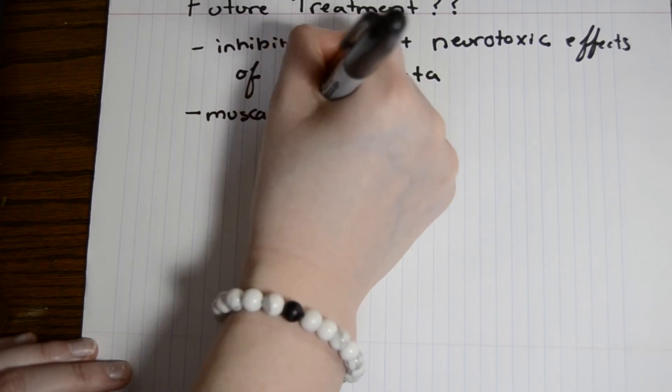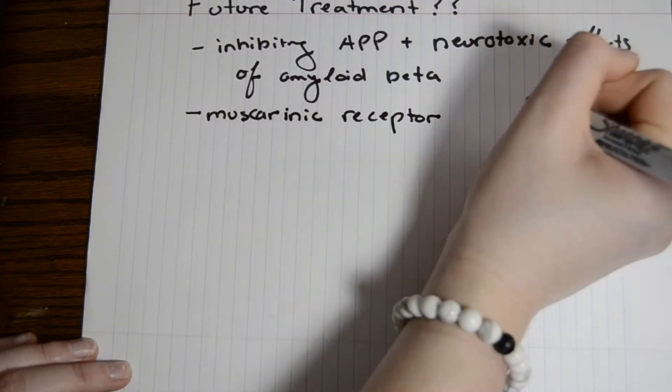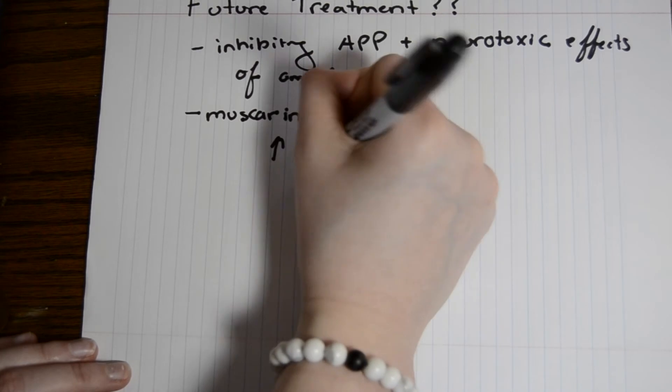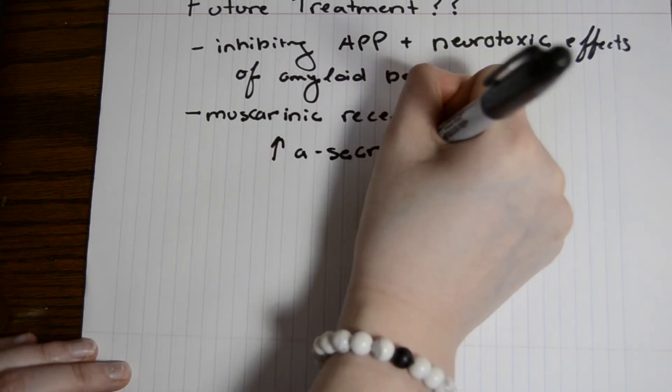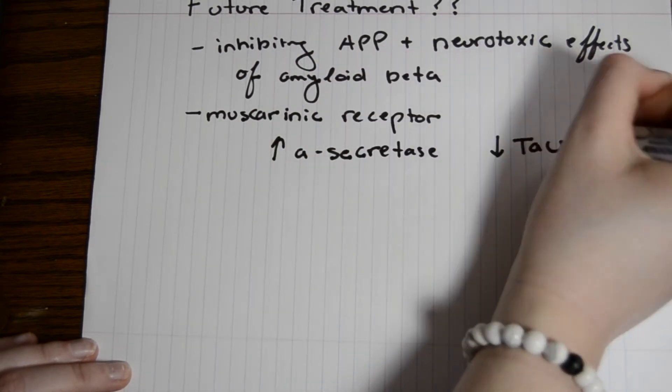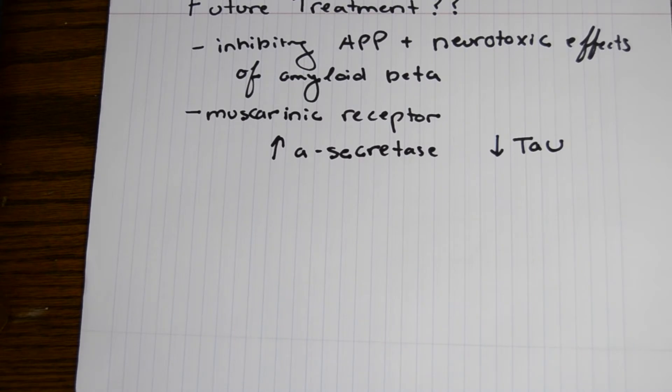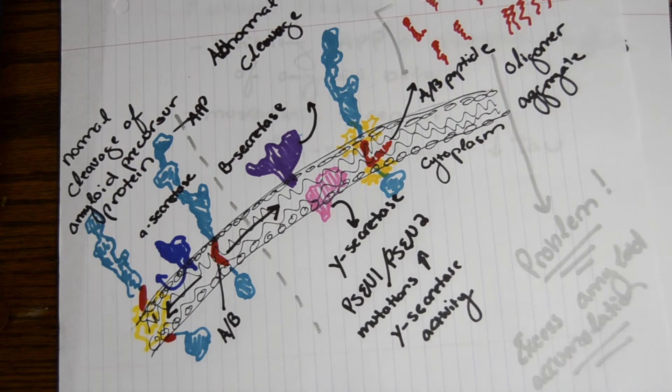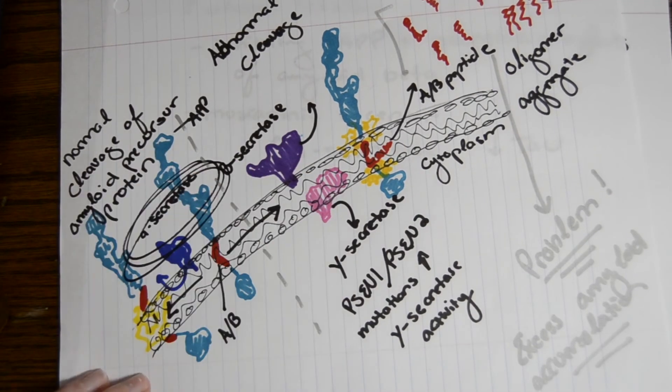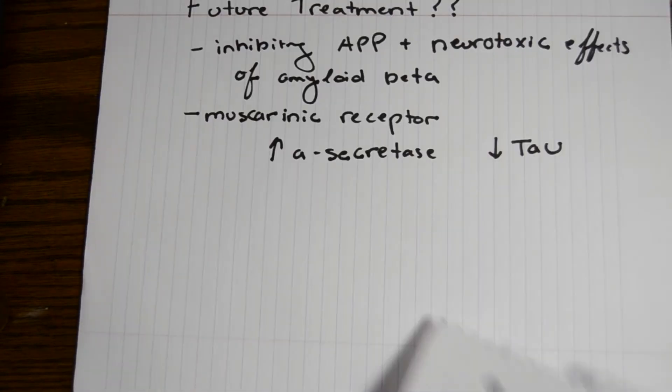To be able to do that, looking back at what we learned about how amyloid beta peptides are cleaved, you could increase alpha-secretase, which would cause, once again, the normal cleavage of these peptides. This would prevent these plaques from being formed.